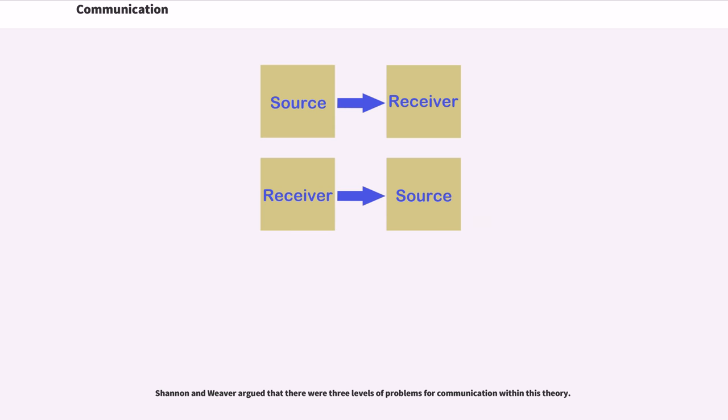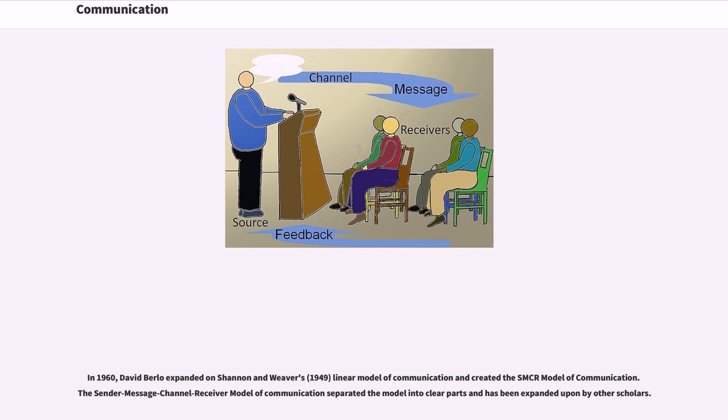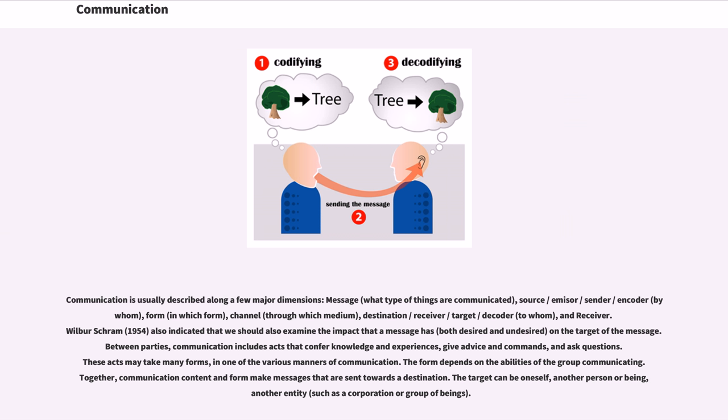Daniel Chandler critiques the transmission model by stating, in 1960, David Berlo expanded on Shannon and Weaver's 1949 linear model of communication and created the SMCR model of communication. The Sender-Message-Channel-Receiver model of communication separated the model into clear parts and has been expanded upon by other scholars. Communication is usually described along a few major dimensions: message (what type of things are communicated), source/emissor/sender/encoder (by whom), form (in which form), channel (through which medium), destination/receiver/target/decoder (to whom), and receiver. Wilbur Schramm (1954) also indicated that we should also examine the impact that a message has, both desired and undesired, on the target of the message.